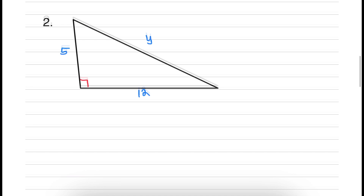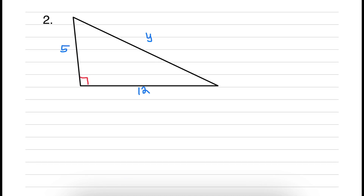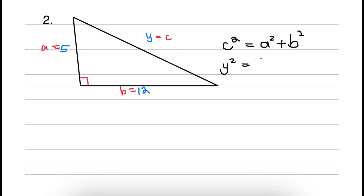Moving on to question two: again we have our shorter sides being 5 and 12, and then our longer side is y — that is the unknown. Remember the formula A squared plus B squared equal to C squared. I'm going to write it as C squared equal to A squared plus B squared, because the hypotenuse is what we are trying to calculate. Let y equal C, let A equal 5, and let B equal 12. Substituting gives us y squared equal to 5 squared plus 12 squared.